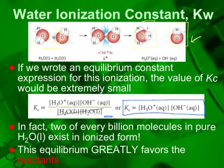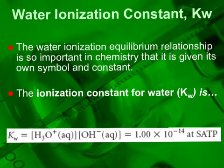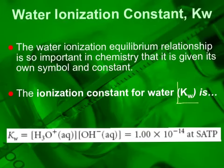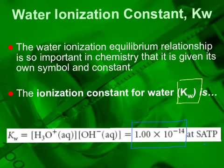Through many experiments, we find that this equilibrium constant is very small, which means the reverse reaction is greatly favored — or, alternatively, the forward reaction happens very rarely. Even though it happens rarely, it is a very important chemistry relationship, so we give that equilibrium constant the special name kW. The value for kW is 1×10⁻¹⁴ at standard ambient temperature and pressure.